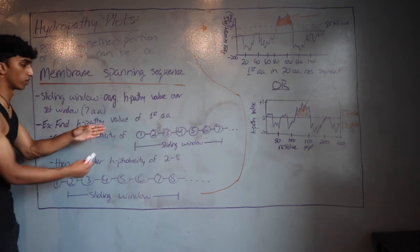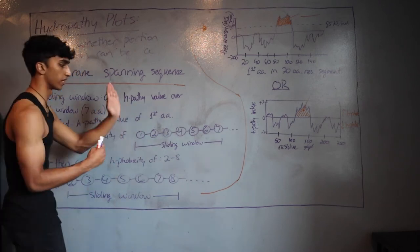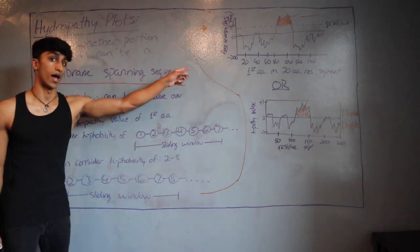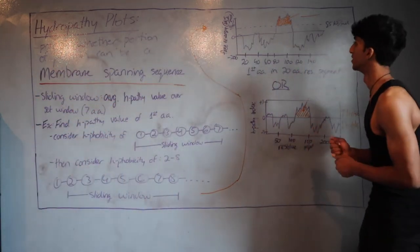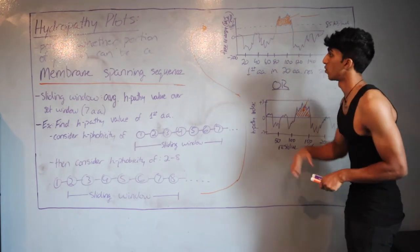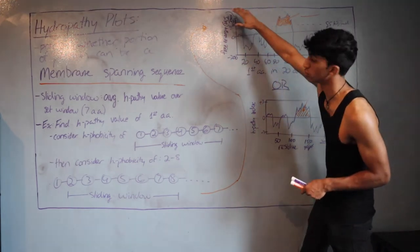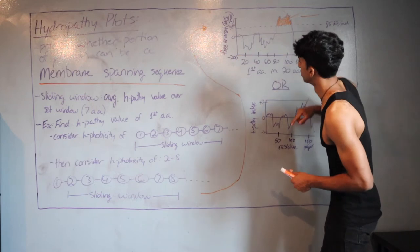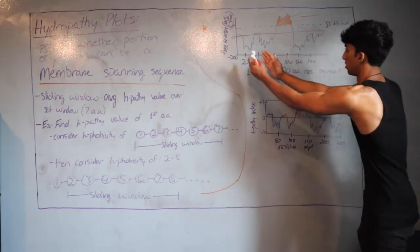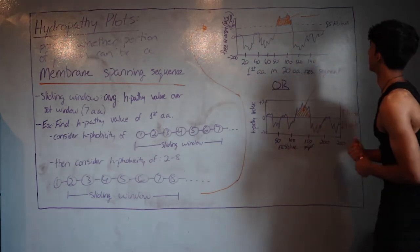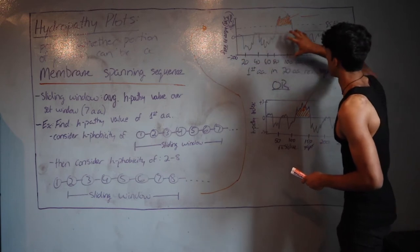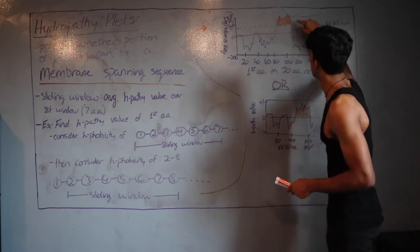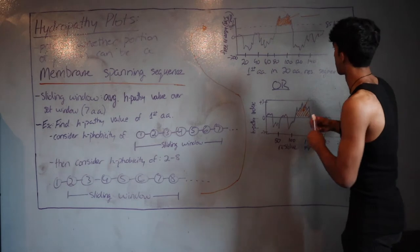By shifting the sliding window further and further down, we get hydropathy values for each amino acid and can create a plot. On the hydropathy plot, the y-axis is free energy in kilojoules per mole (ranging from about +200 to -200) and the x-axis is the first amino acid in each 20-residue segment. Regions above a threshold of about 85 kJ/mol are hydrophobic.